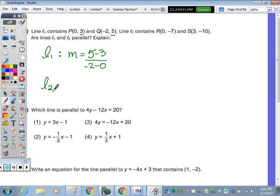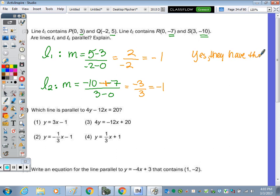Line 2, and I like to write it and do all the math at the end, are these two points here. And I'm going to subtract the same direction, so negative 10 minus a negative 7 over 3 minus 0. So doing the math for line 1, 5 minus 3 is 2, negative 2 minus 0 is negative 2, and then 2 divided by negative 2 is a negative 1. For line 2, negative 10 minus a negative 7, that turns to addition, and we end up with negative 3 over 3, which is negative 1. So are the lines parallel? Yes. And that's because they have the same slope.